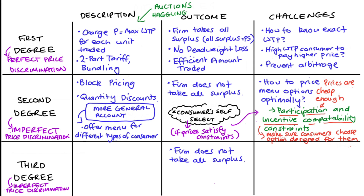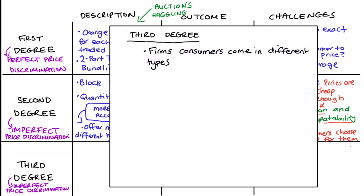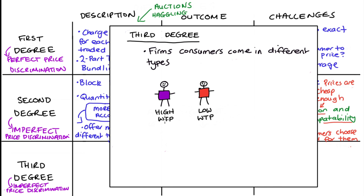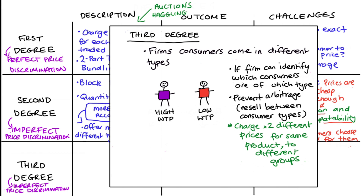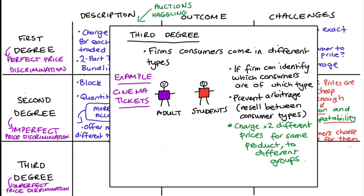From this perspective, second degree is not just about quantity discounts but more generally about offering a menu of choices where consumers with different types of demand self-select into different options — as long as participation and incentive compatibility constraints are met. This contrasts nicely with third degree price discrimination. Third degree is when the firm faces consumers of different types, just like second degree. As an example, say we again have a high and a low willingness-to-pay consumer. In this case, the firm can easily identify what type a consumer is when they present themselves, and can prevent arbitrage — the reselling of the product between consumer types.